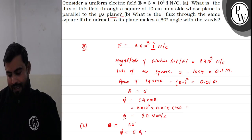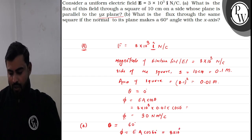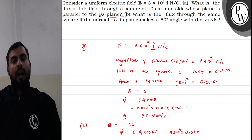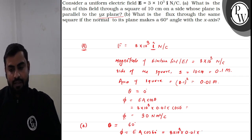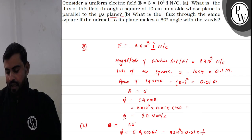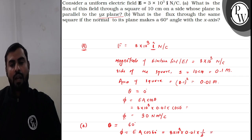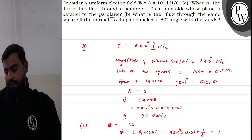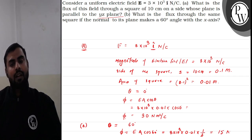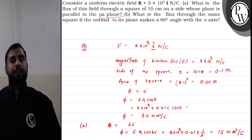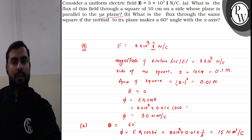To find the flux, we will use E A cos 60 degrees. The value of E is 3 into 10 raise to the power 3, the area is 0.01, and we use the value of cos 60, which is 1 by 2. When we calculate it, we get 15 Newton meter square per coulomb. I hope that both parts are now understood.